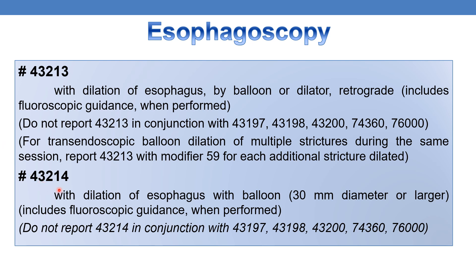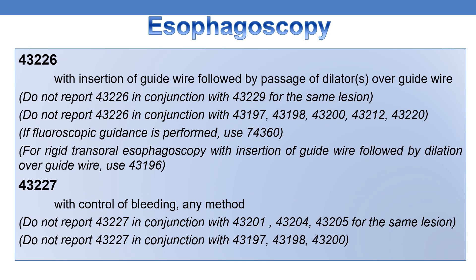CPT 43214 deals with esophagoscopy, flexible, transoral, with dilation of esophagus with balloon 30 mm diameter or larger, including fluoroscopic guidance when performed. CPT 43226 deals with esophagoscopy, flexible, transoral, with insertion of guide wire followed by passage of dilator over guide wire.